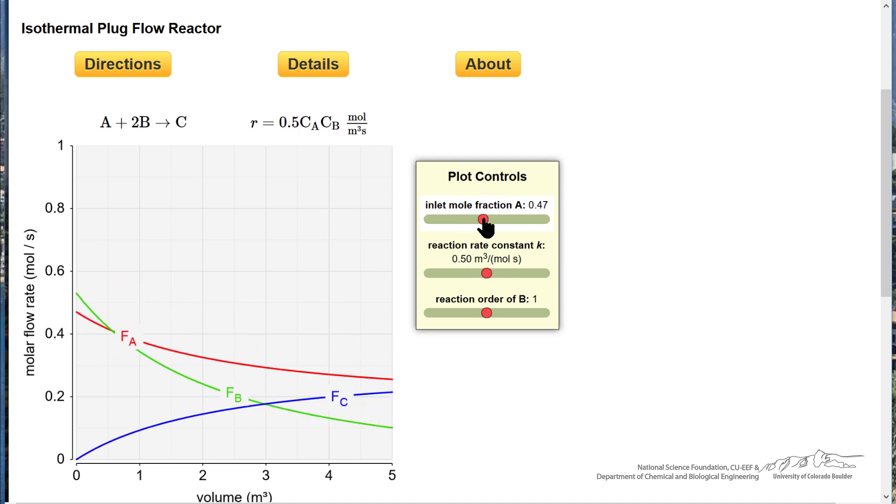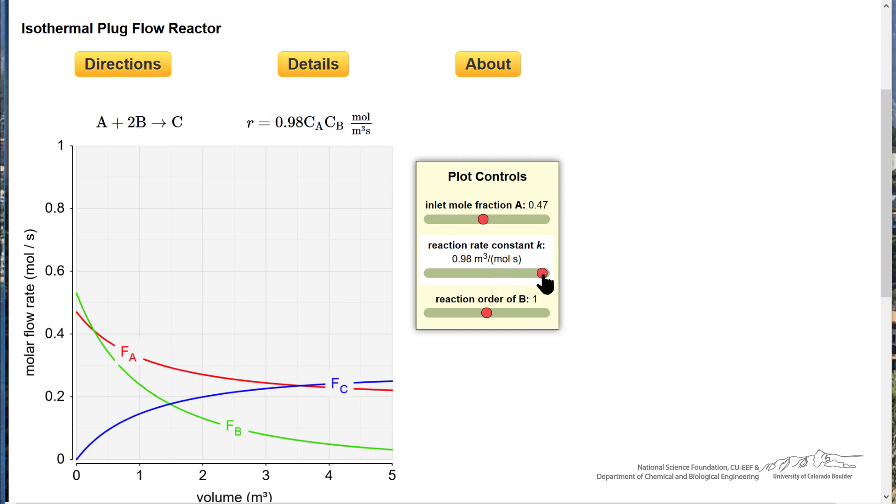The rate constant, so the rate constant increases means we of course deplete A and B sooner in the reactor.